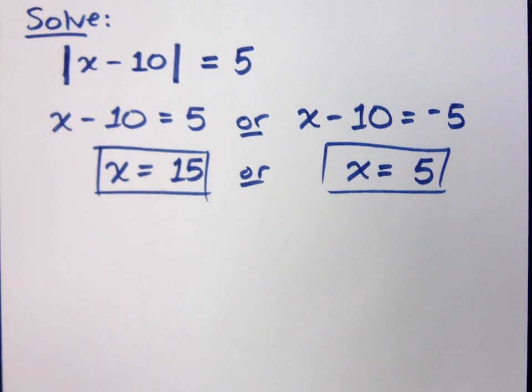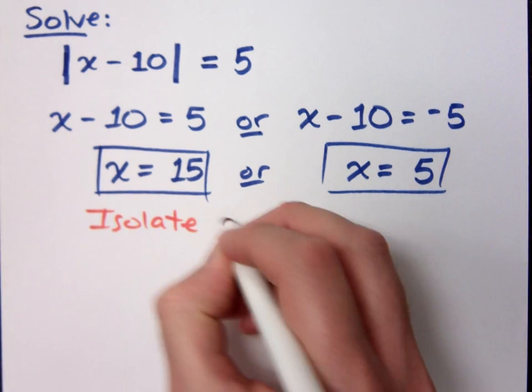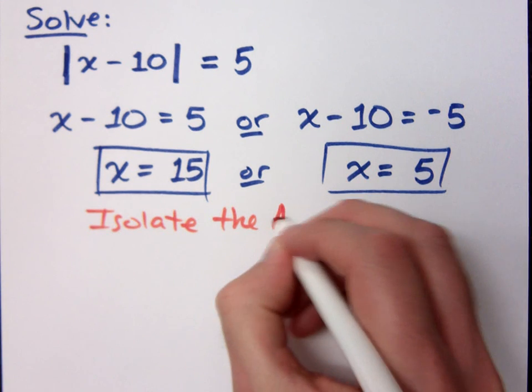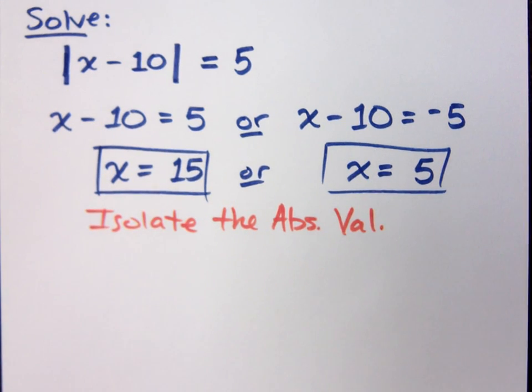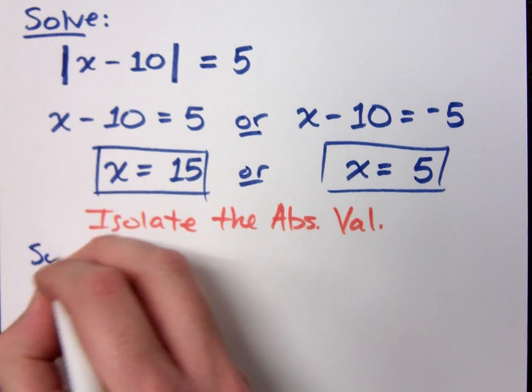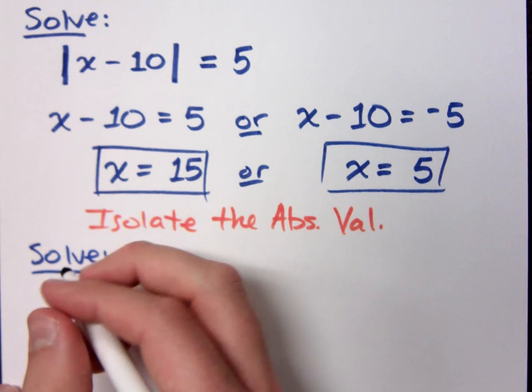There is one thing that we need to know about any of these guys with absolute values. Isolate the absolute value. What does isolate mean? Get it by itself. All of the properties that we wrote had the absolute value by itself. So you have to do that. If you don't, guess what you get to be? Wrong.